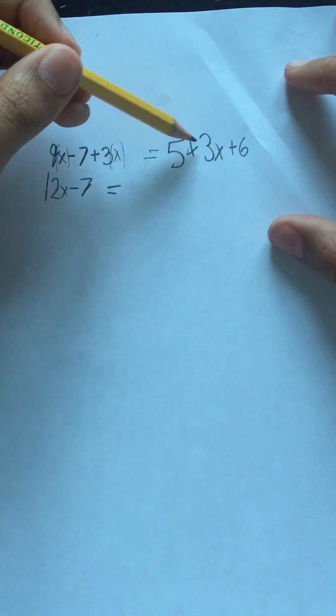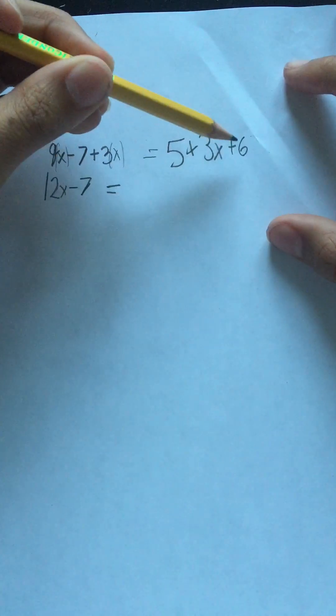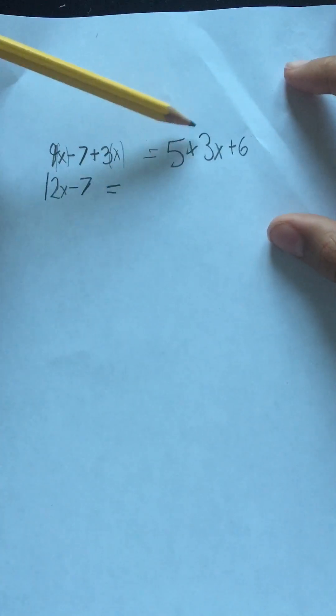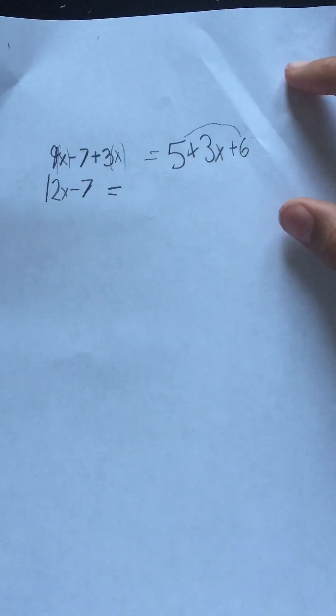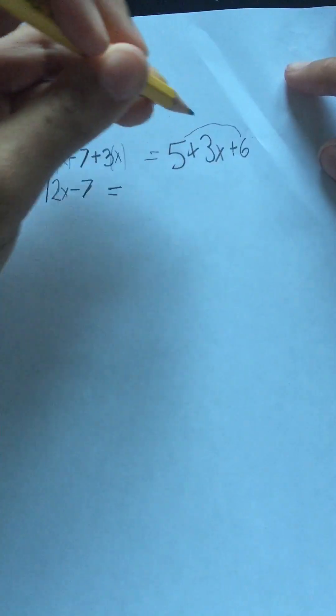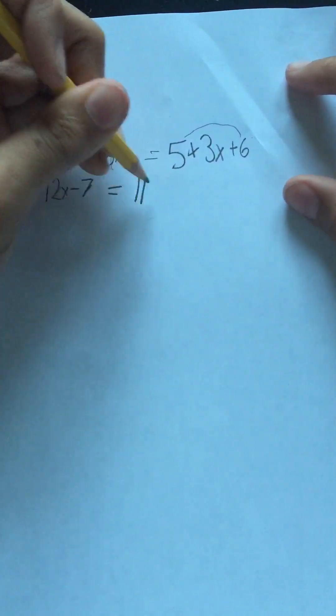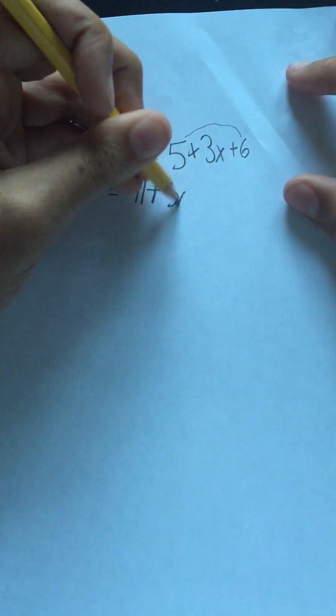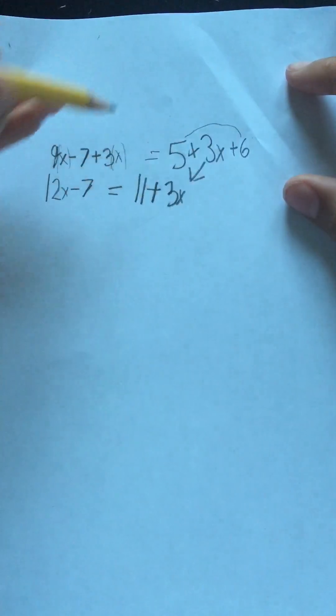And then we have 5 plus 3x plus 6. We have 5 and positive 6. Since they're not being multiplied by anything, and they're the same terms, we can add them together. 5 plus 6 is equal to 11, so we have 11 plus 3x.